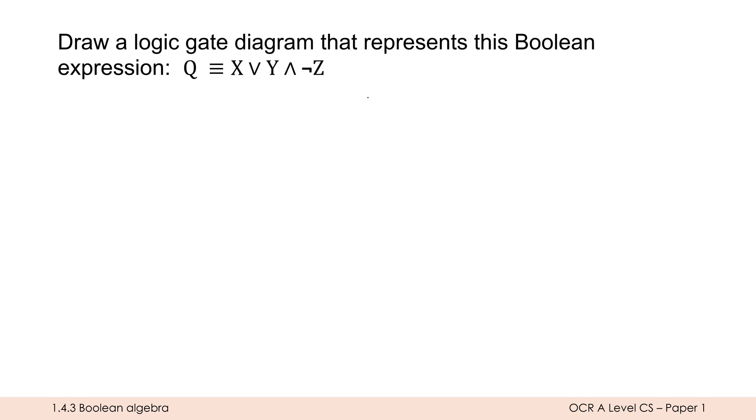Another example might be where instead of it giving you the diagram, it does the opposite. So it gives you an expression and tells you to write it or draw it as a logic gate diagram. So here we're giving Q as our output, and X, Y, and Z are our three inputs. So let me do a Q on the right-hand side. Our outputs always go on the right and our inputs always go on the left. You could draw a box if you wanted to, but it's not super important.